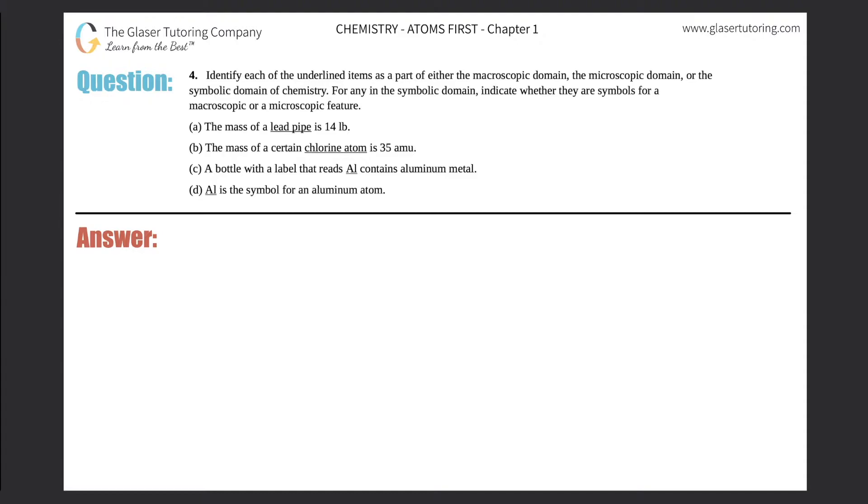Number four: Identify each of the underlined items as a part of either the macroscopic domain, the microscopic domain, or the symbolic domain of chemistry. For any in the symbolic domain, indicate whether they are symbols for a macroscopic or a microscopic feature. I see a, b, c, and d, so I'm just going to write them over here so that we have them separated.